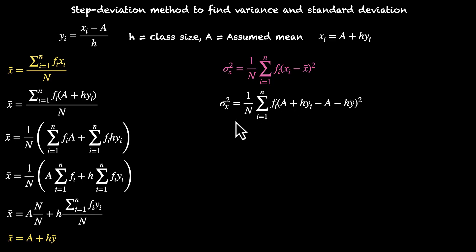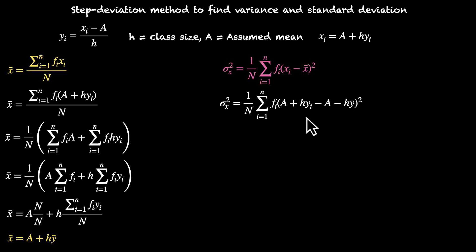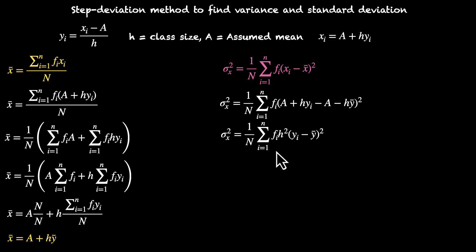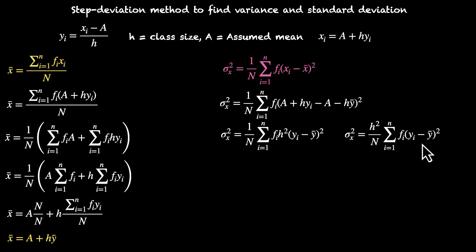Now here xi = a + h·yi and x̄ = a + h·ȳ. So let's substitute both of them. We have σx² = (1/n) × Σ fi × [(a + h·yi) − (a + h·ȳ)]². Now a and a cancel out. What we have is h·yi − h·ȳ, whole squared. So this is σx² = (1/n) × Σ fi × h²·(yi − ȳ)². Things that are constant can be taken out, so h² comes out: σx² = (h²/n) × Σ fi·(yi − ȳ)².